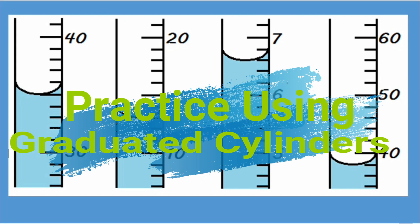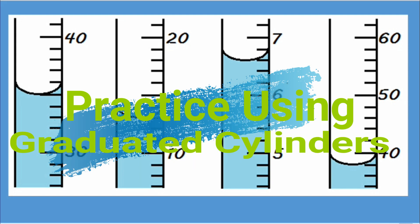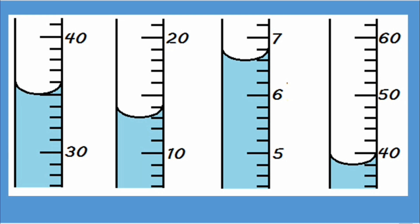Here we have four graduated cylinders for practice. Hit pause and try to figure out the numbers by yourself before continuing. Let's take a look at each graduated cylinder. Hopefully you got for the first one our number is 35 milliliters.